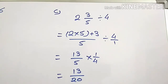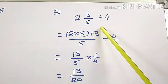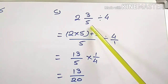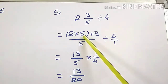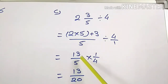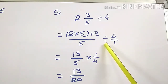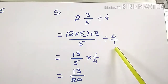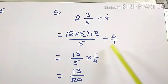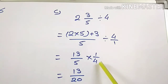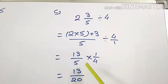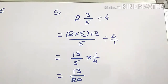Question C: 2 and 3/5 divided by 4. Convert this mixed number into improper fraction. 2 fives are 10, plus 3 is 13/5. Change the sign of division into multiplication and take reciprocal of 4, which is 1/4. No common factor in numerator and denominator. Product of numerator: 13 into 1 is 13, and product of denominator: 4 fives are 20. So 13/20 is the quotient.